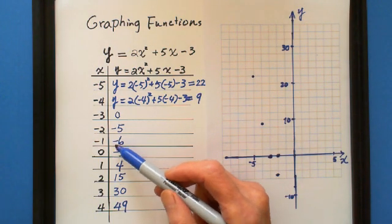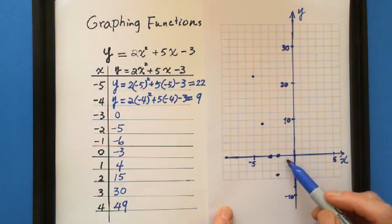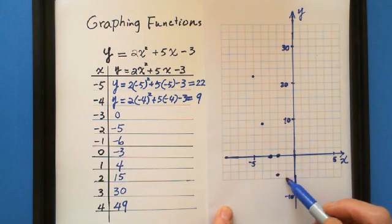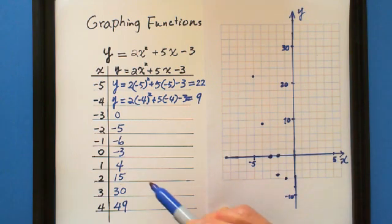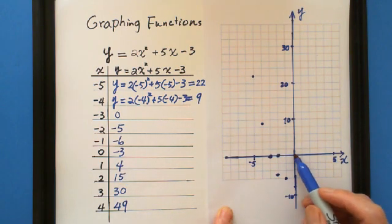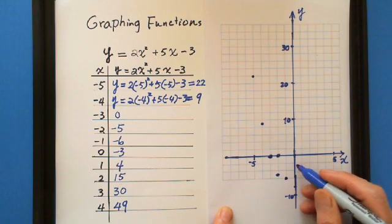So negative 1 is negative 6, negative 1 is negative 6 which is this point. And 0 is negative 3, 0 is negative 3, here is negative 3.